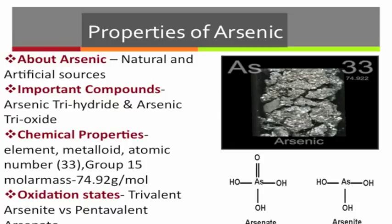Anthropogenic activities also contribute, including human activities such as smelting, use of pesticides, and coal-fired power plants. Arsenic is a metalloid and so it has both metal and non-metal properties.